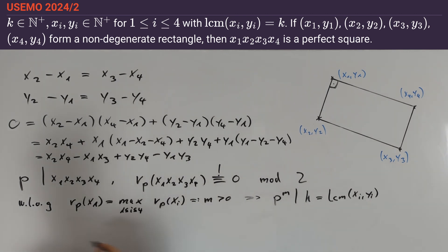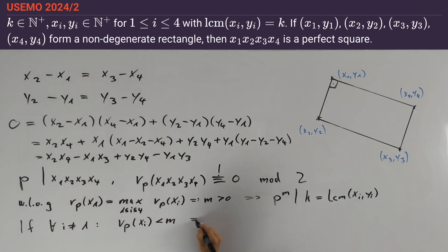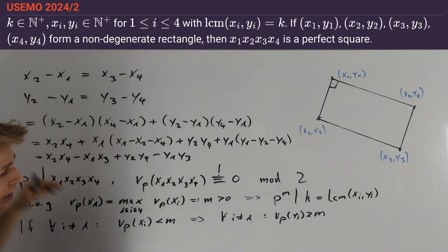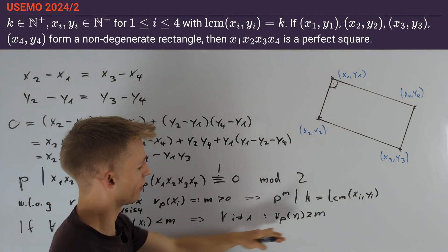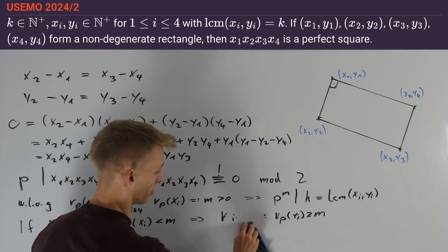Let's first consider the case that for all i ≠ 1 we have nu_p(xi) < m. This directly implies that for all i ≠ 1 we have nu_p(yi) ≥ m. Using our second equation from above, this also implies the equation holds for i = 1.